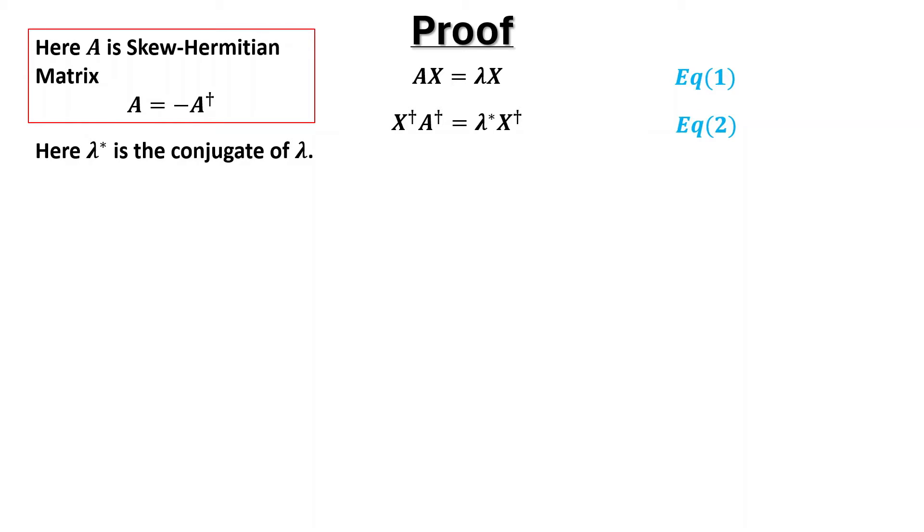Since A is skew Hermitian matrix, A equals minus A dagger. So we can replace A dagger in equation 2 by minus A, and we have equation 3.